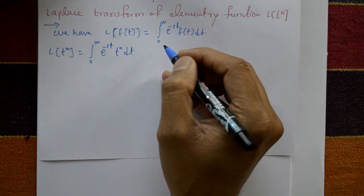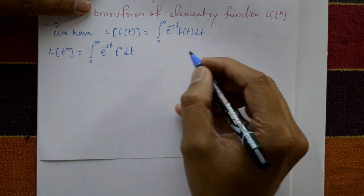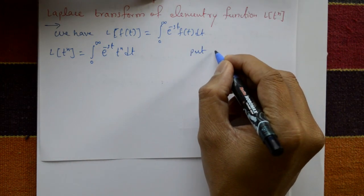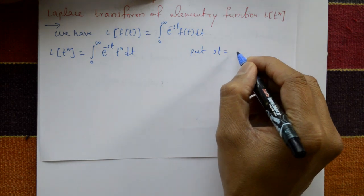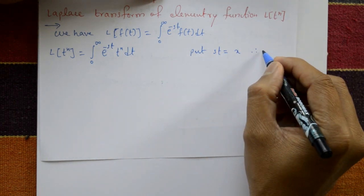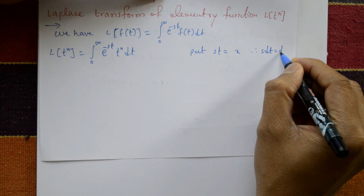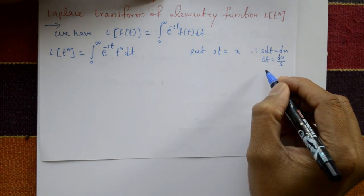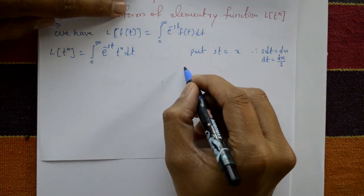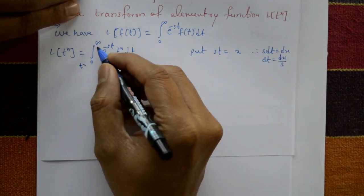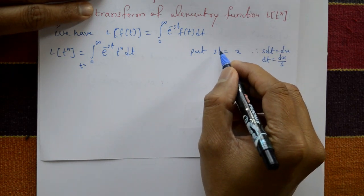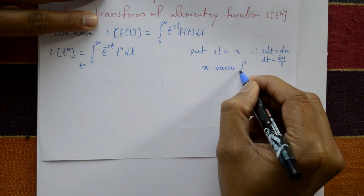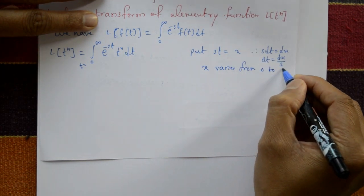Now it's not possible to integrate directly, so we use the substitution: let st equal to x. Differentiating, dt is equal to dx by s. When t equals 0, x equals 0, and when t equals infinity, x varies to infinity. So x varies from 0 to infinity.